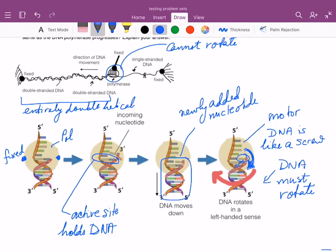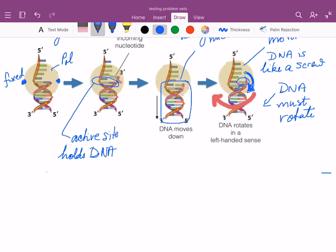So the key idea here is that the DNA must rotate in a left-handed sense. So now, let's take a look at the topological constraints on the DNA in this situation. And to do this, I'll draw a very simplified diagram showing only a few turns of DNA.